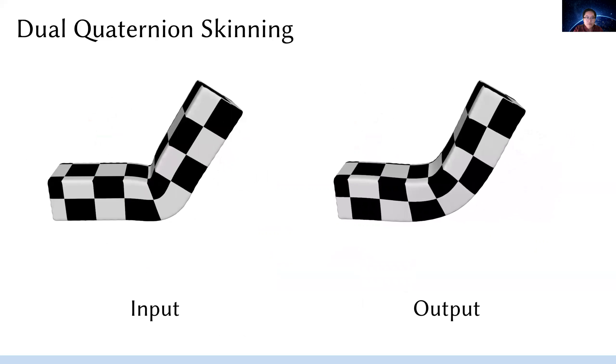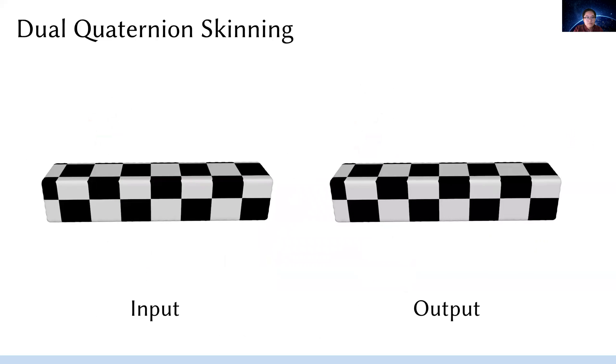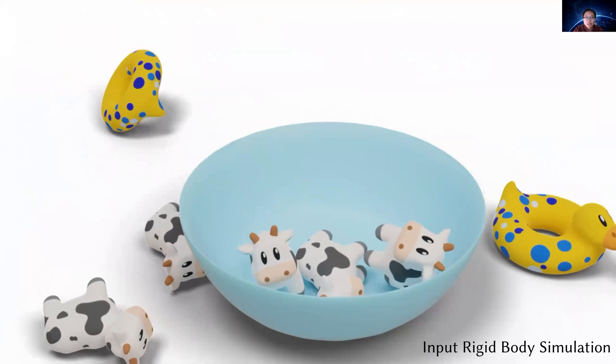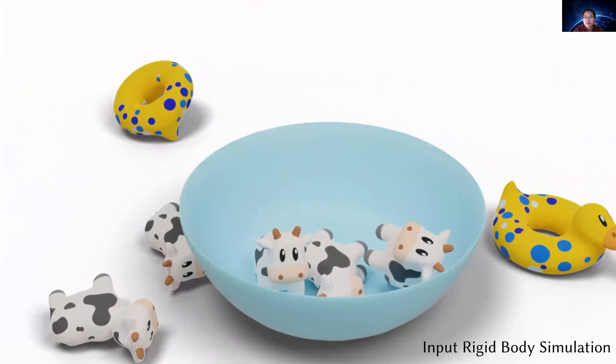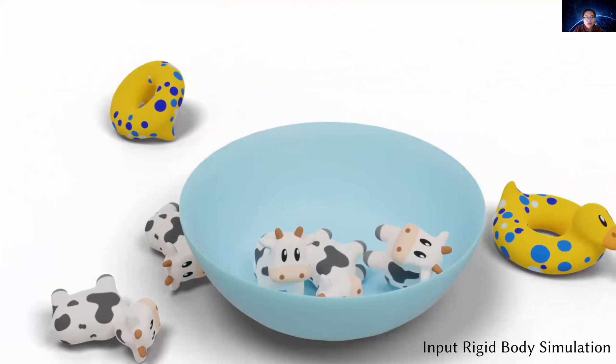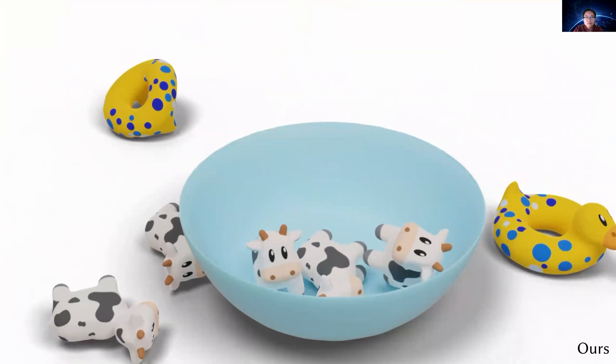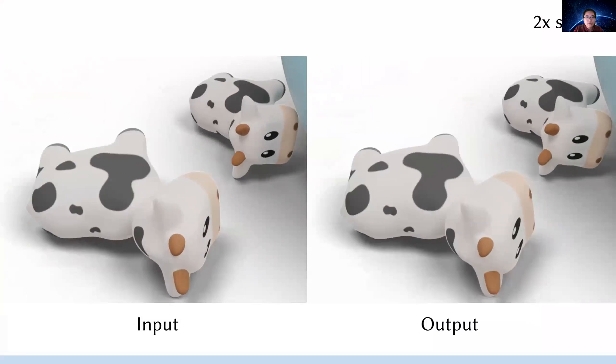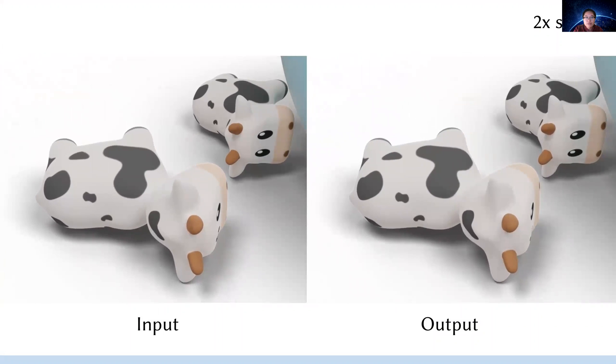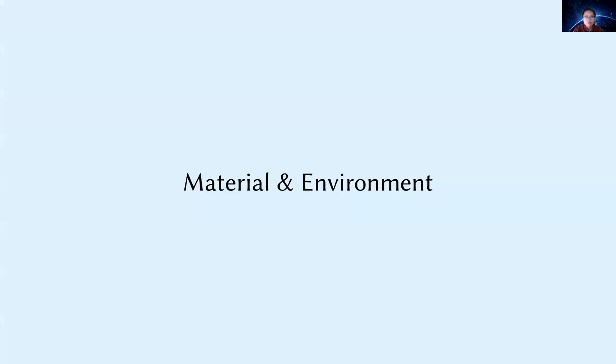It also holds for this 3D dual quaternion skinning example. Notice that our complementary dynamics automatically smooths out the bulging artifacts of dual quaternion skinning. The same is true for rigid body simulations. We could add secondary effects to post-process a rigid body simulation and make it look more elastic without needing to rerun collision detection or change the overall scattering of objects. Here is a zoomed-in view and you could see how precisely the position is preserved.